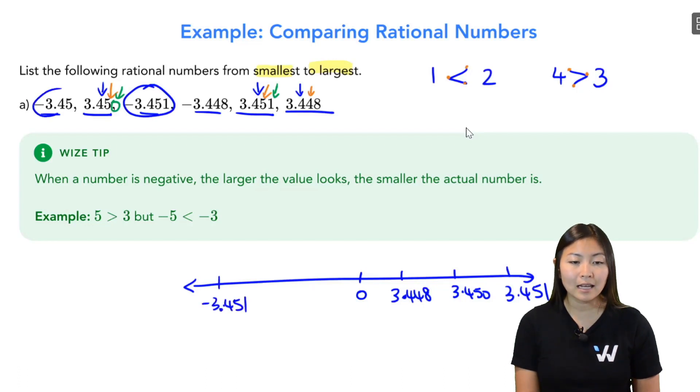Then I have the next one, which is negative 3.45. And then finally, negative 3.448 is the closest to zero.